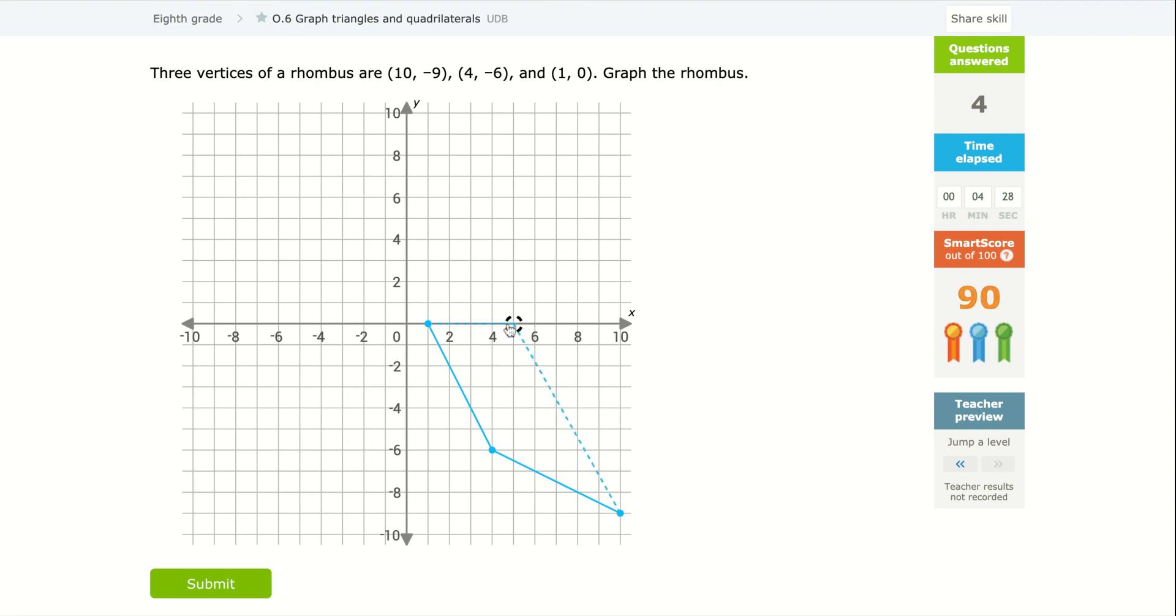Now a rhombus, what's a rhombus? Well, a rhombus is a parallelogram where all sides are, it's a quadrilateral, in fact, where all sides are equal in length. So I got to make sure that we have equal length.